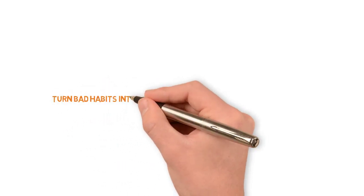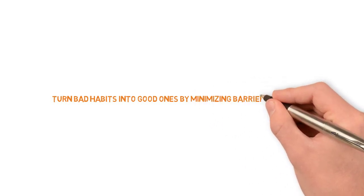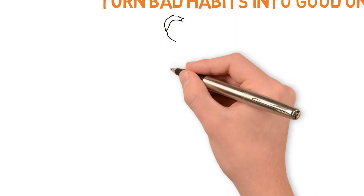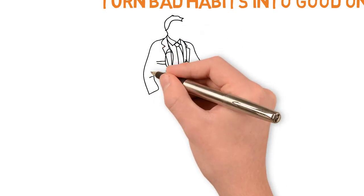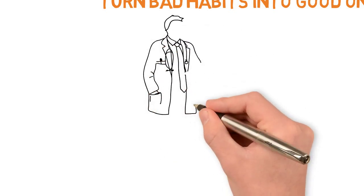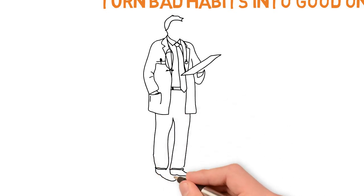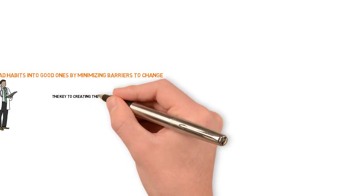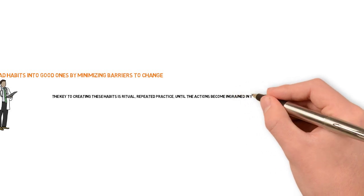Lesson number six from this book is to turn bad habits into good ones by minimizing barriers to change. Common sense is not common action. That's why, even though doctors know better than anyone the importance of exercise and diet, 44% of them are overweight. The key to creating good habits is ritual, repeated practice until the good actions become ingrained in your brain's neural chemistry.